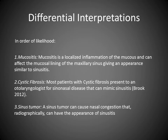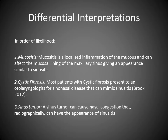Here are the differential interpretations in order of likelihood. Number one is mucositis — a localized inflammation of the mucus that can affect the mucosal lining of the maxillary sinus, giving an appearance similar to sinusitis. Number two is cystic fibrosis — most patients with cystic fibrosis present to an ENT for sinonasal disease that can mimic sinusitis. Number three is a sinus tumor — a sinus tumor can cause nasal congestion that radiographically can have the appearance of sinusitis.